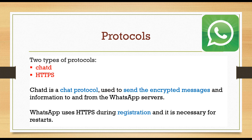Next, protocols. WhatsApp uses two protocols for their communication. One is a stat protocol used to send encrypted messages and information to and from the WhatsApp server. The second is HTTPS, which is needed for registrations and other purposes when you set up the app on your phone.